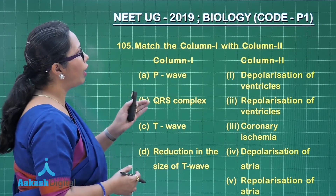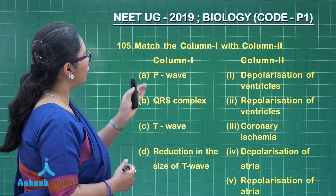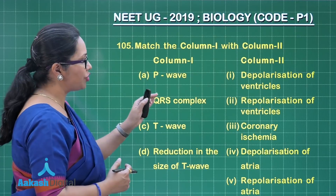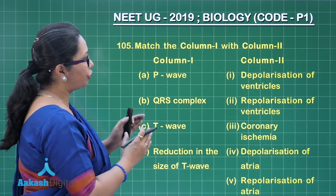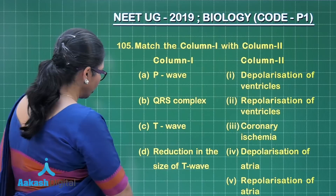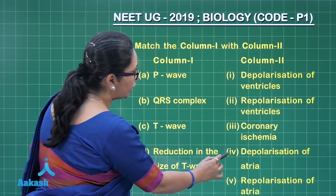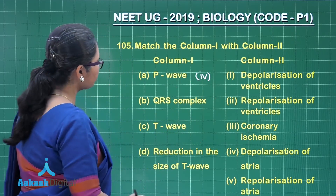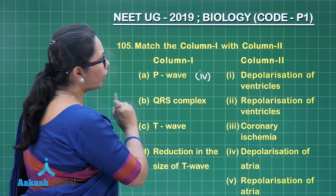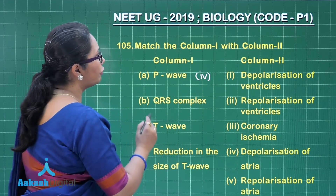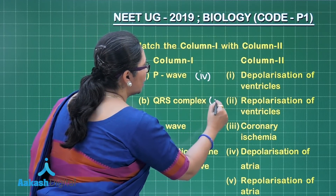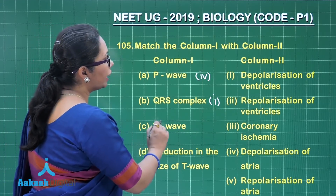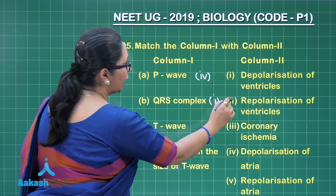Question 105: Match Column 1 with Column 2. The P wave on an ECG corresponds to depolarization of the atria, so 'a' matches with the fourth choice. The QRS complex represents depolarization of the ventricles, so 'b' matches with choice 1.